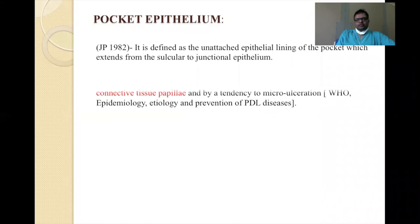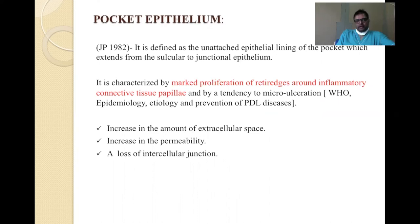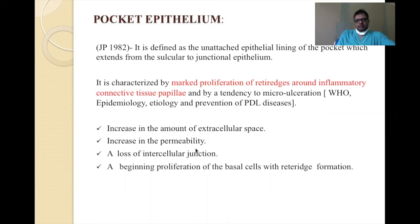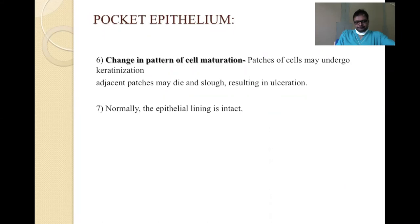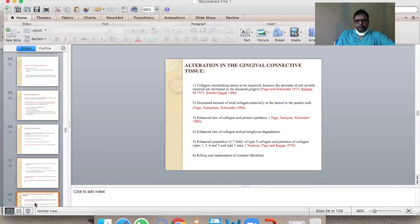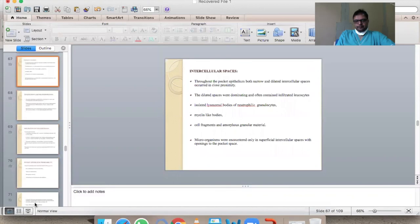Once a periodontal pocket is formed, the epithelium lining the pocket is known as pocket epithelium — what in a physiological state was known as sulcular epithelium. In the pocket epithelium, the intercellular space is larger, making it more permeable so that more and more cells can pass through.